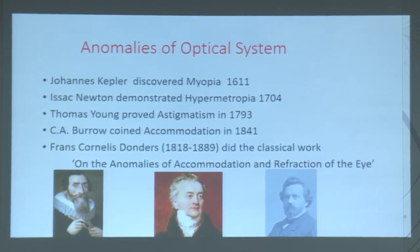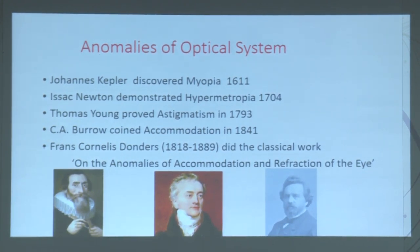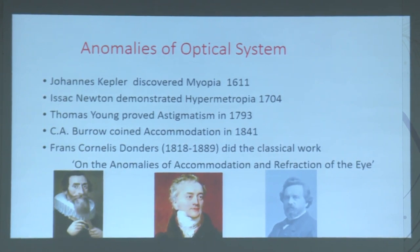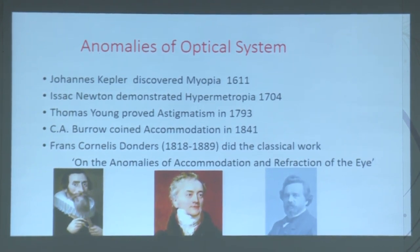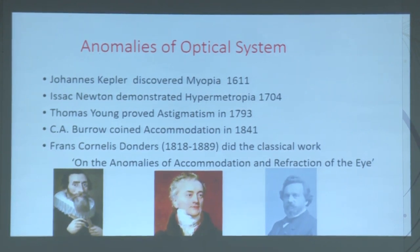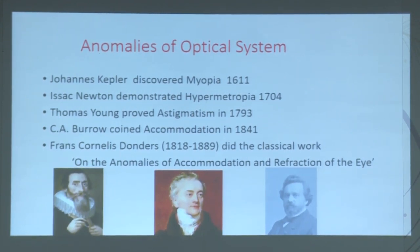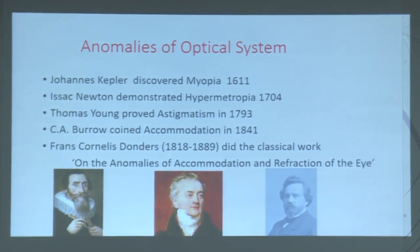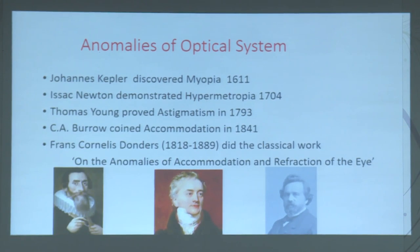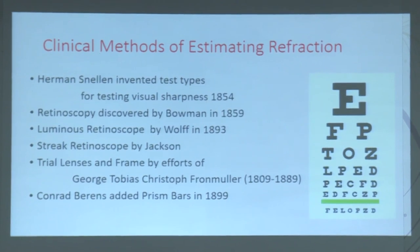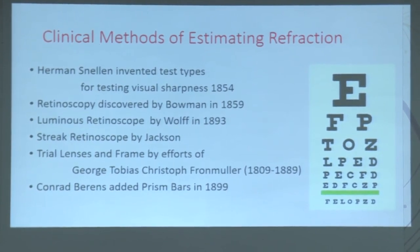Johannes Kepler discovered myopia in 1611. Isaac Newton demonstrated hypermetropia in 1704. Thomas Young proved astigmatism. C.A. Baroquer coined the term accommodation in 1841. Cornelius Donders did the classical work on the anomalies of accommodation and refraction of the eye, and clinical methods of estimating refraction.